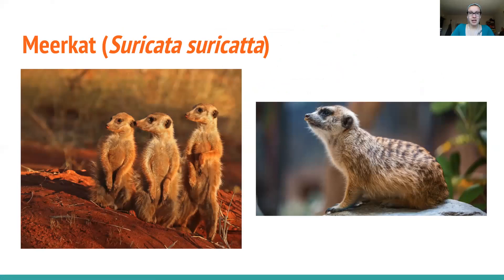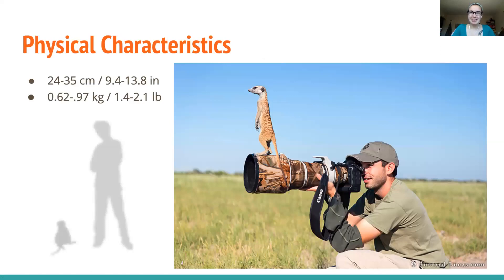The meerkat, or Suricata suricata, is actually just a small mongoose — very closely related to mongooses and they look it. Physically, they're very small and slim in their build, but they have a wide head, big eyes, and a pointy snout, with long legs and a thin tail. They're about 24 to 35 centimeters, or nine and a half to about 14 inches — a little over a foot tall. They usually weigh between half a kilo and a full kilo, so about one and a half to two pounds.